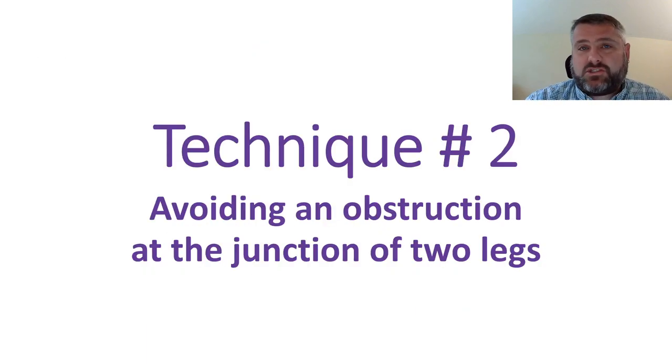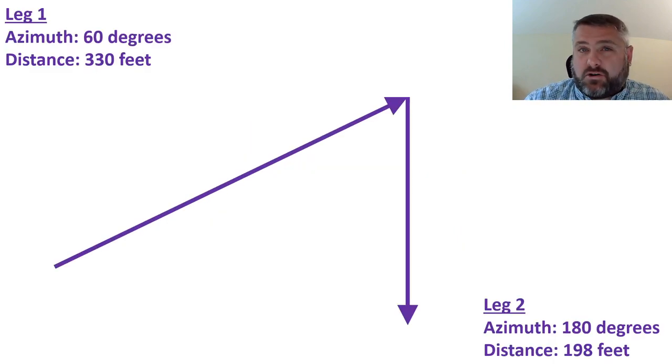That's if the obstruction is in the middle of your traverse. But what happens if it's right at the junction of two legs? This sounds a little more complicated but actually it's really honestly a little bit simpler just based on how geometry is going to work, basically forming a sort of trapezoid.